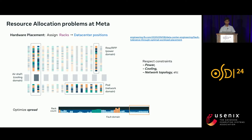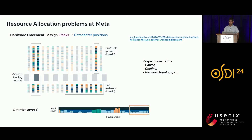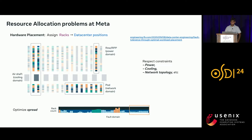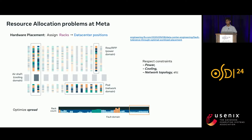Let's start with the resource allocation problems we encounter at Meta. At the lowest level of our infrastructure stack, we have the hardware placement problem. Our data centers are a very dynamic environment — every few months, new racks land and old racks are decommissioned. The problem is to assign racks into data center positions to optimize their spread across failure domains, while respecting constraints such as power, cooling, and network topology.